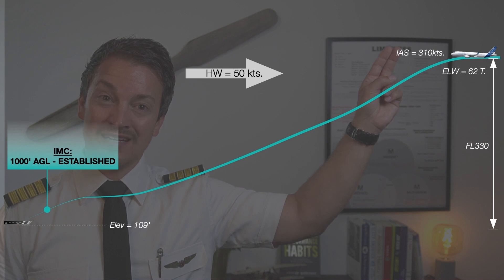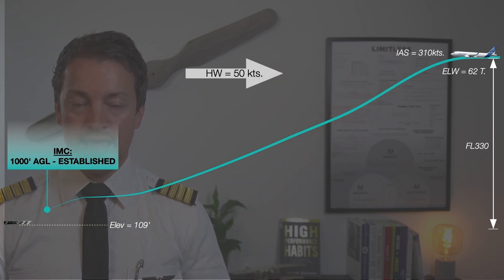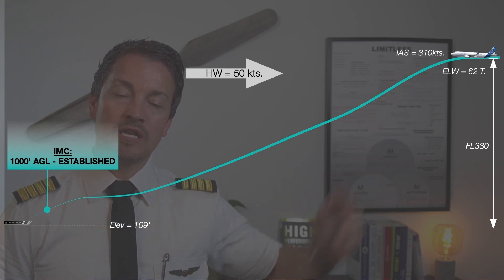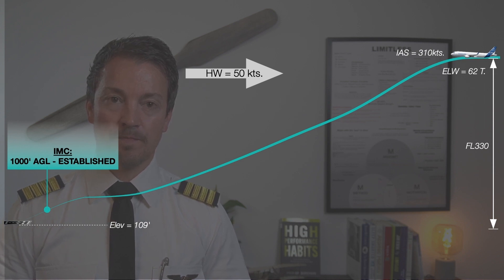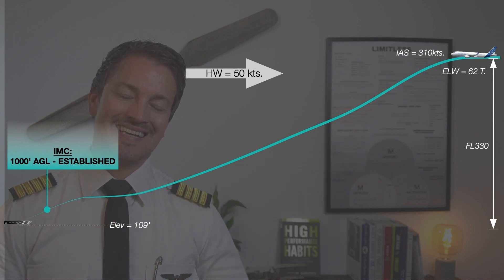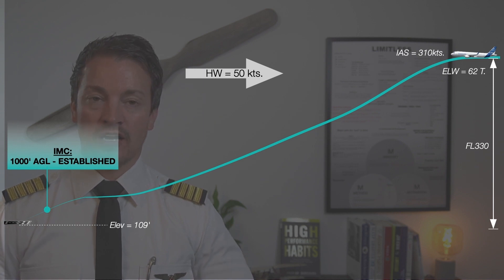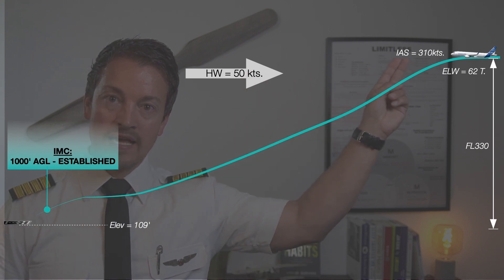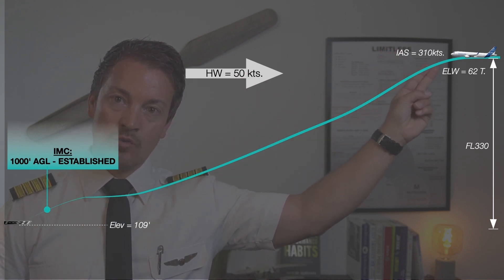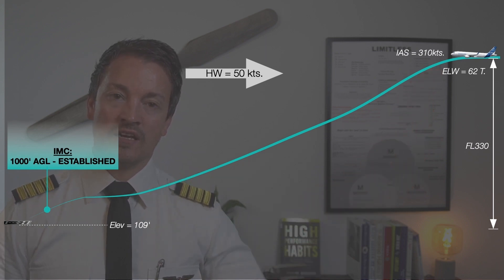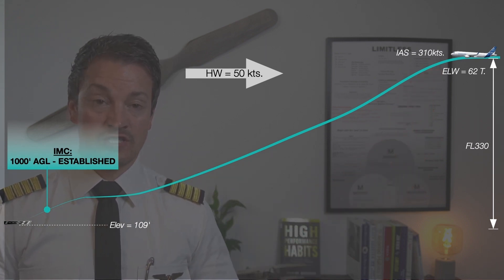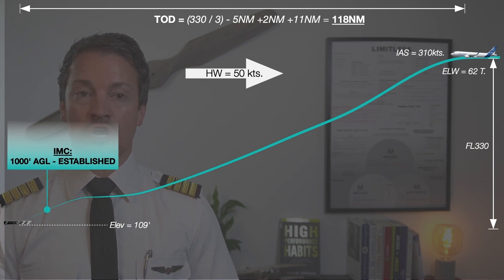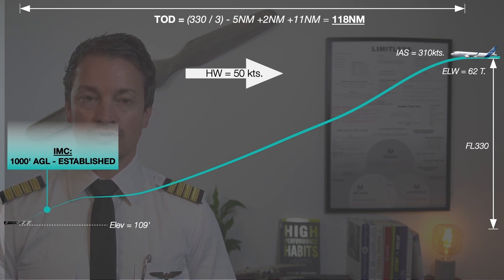My estimated landing weight and my current weight is 62 tons. Indicated airspeed at this point is 310 knots and I have a 15-knot headwind. So I will correct for the weight being above 60 tons — 2 tons above. I will account for the 310 knots and for the headwind. Headwind decreases the distance, high indicated speed increases the distance, heavy weight increases the distance. I calculate quickly I need 118 nautical miles from my current state down to threshold.